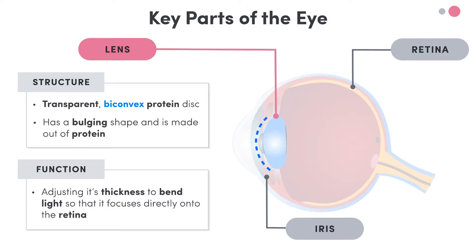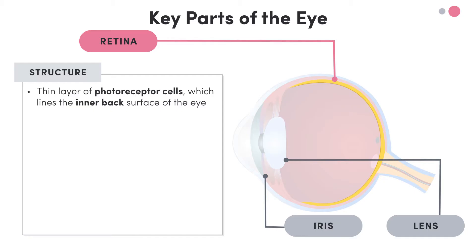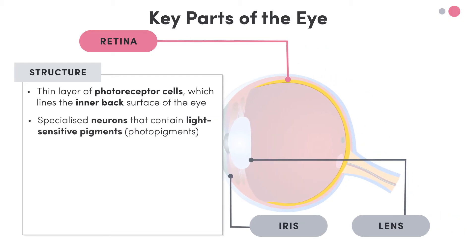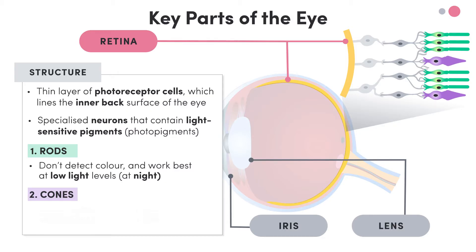Last but not least, we're going to cover the retina — that's this thin layer of photoreceptor cells which lines the inner back surface of the eye. In a little more depth, photoreceptor cells are specialised neurons that contain light-sensitive pigments, also known as photopigments. These photopigments are proteins that change their structure when they absorb light energy. Now, there are actually two types of photoreceptor cells: rods and cones. Basically, rods don't detect colour and work best at low light levels, so at night. Cones, on the other hand, do detect colour and work best in bright light during the day.